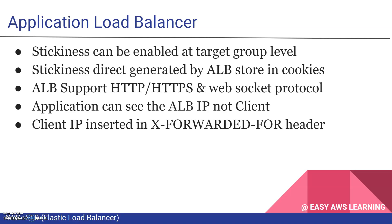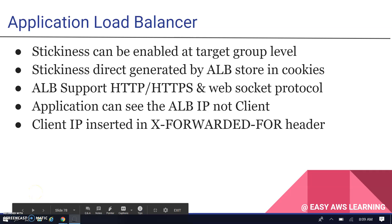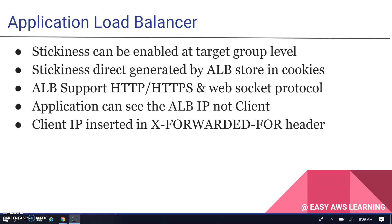Stickiness can be enabled at the target group level; it is directly generated by the ALB and stored in a cookie, so no need to maintain it from your application level. ALB supports HTTP, HTTPS, and WebSocket protocols. The application can see the ALB IP but not the client IP — that's a key important question in AWS certification. When a customer makes a request, the ALB terminates that connection and forwards a new connection to the instance with the load balancer IP, not the actual user IP. The real client IP is inserted in the header called X-Forwarded-For.